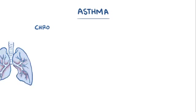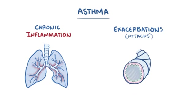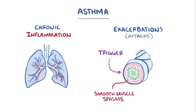Alright, as a quick recap. Asthma is characterized by chronic inflammation in the lungs as well as asthma exacerbations or attacks, where certain triggers start up more inflammation which leads to smooth muscle spasms and mucus production, both of which make it hard to breathe.